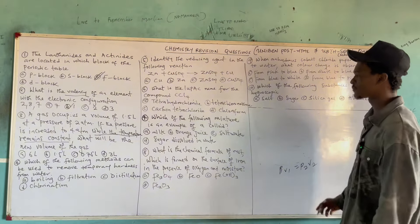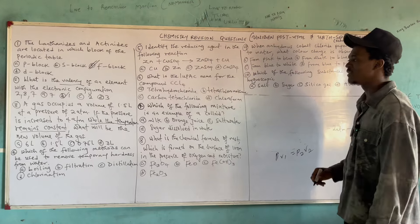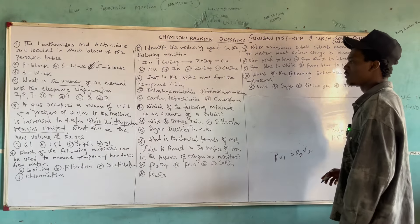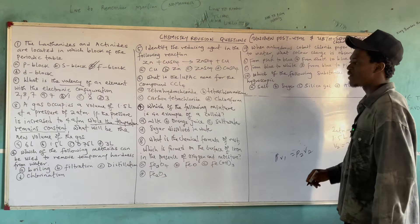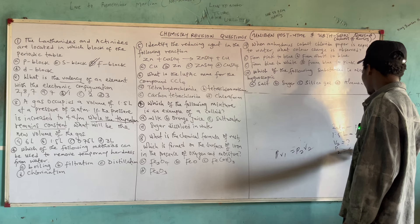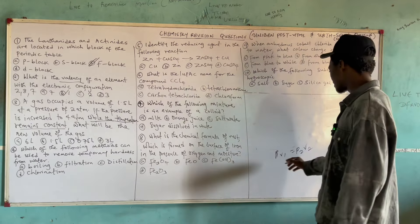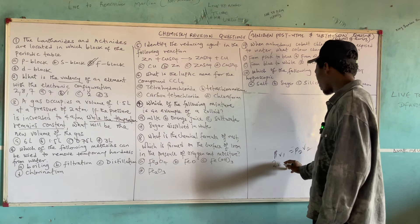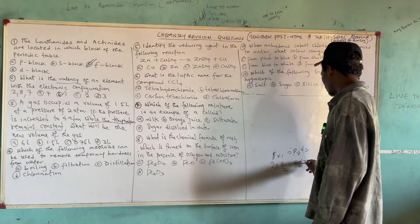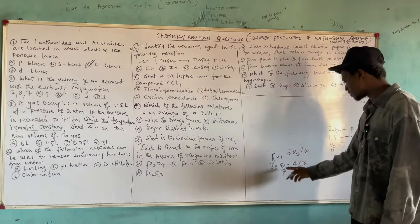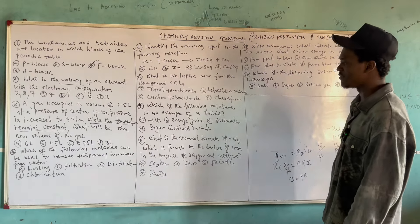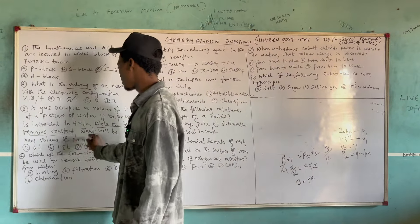Plugging in values: P1 = 2, V1 = 1.5 (which is 3/2), P2 = 4, and V2 = x (unknown). So: 2 × 1.5 = 4 × x, giving 3 = 4x, therefore x = 3/4 = 0.75 liters. The correct answer is option C, 0.75.